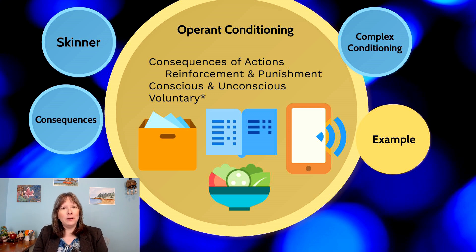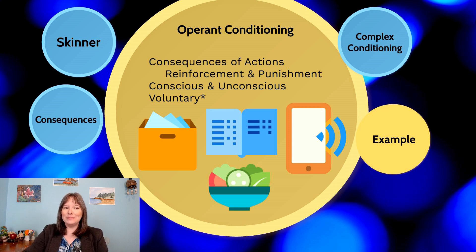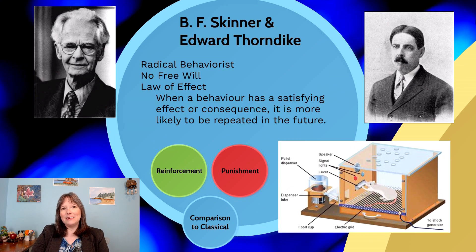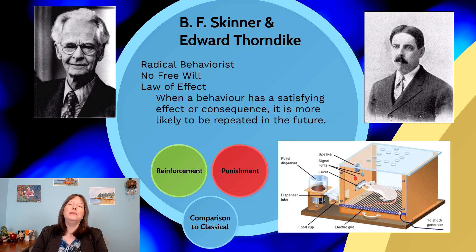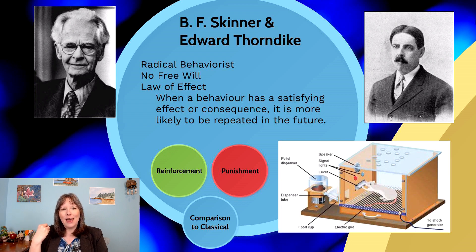Examples include whether you choose to study, open or close a box, text someone, turn your phone off, or spend time on your phone. Now keep in mind I said 'so it seems' because even if these things are considered voluntary, the main name here is B.F. Skinner, and he believed there was no free will. He believed that even with operant conditioning, although we were conscious of it and felt in control, what you order for lunch may not actually be your decision. Skinner was a radical behaviorist who believed everything we do is controlled by our past experiences.